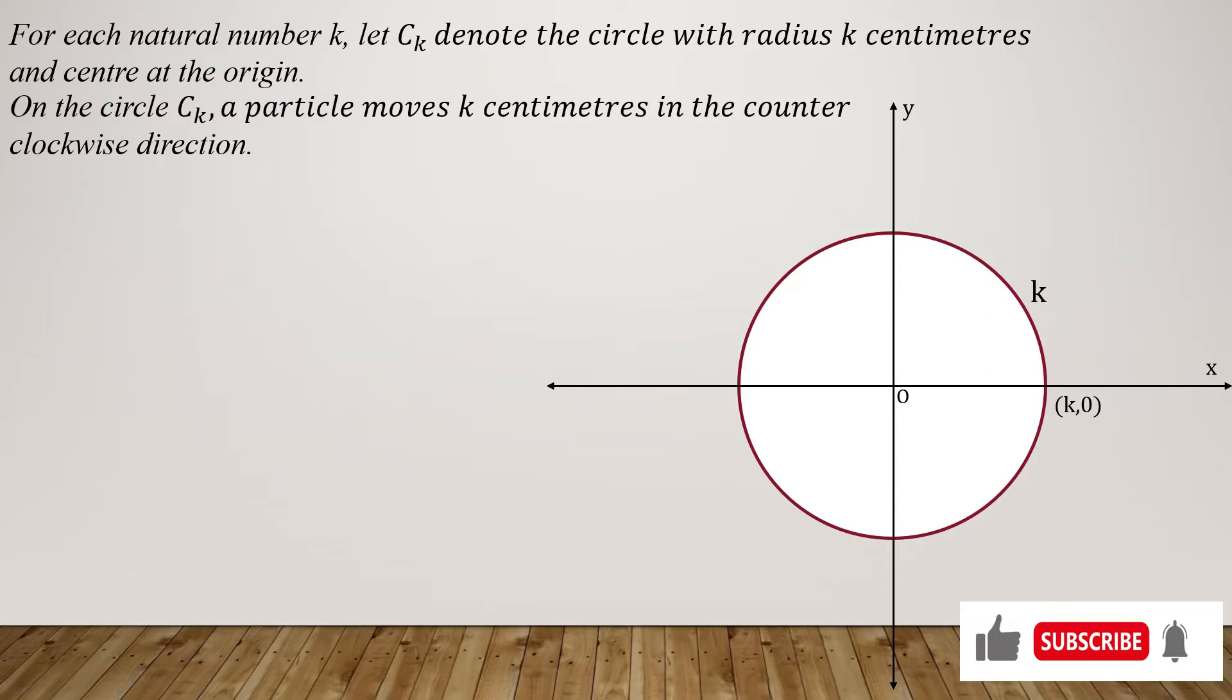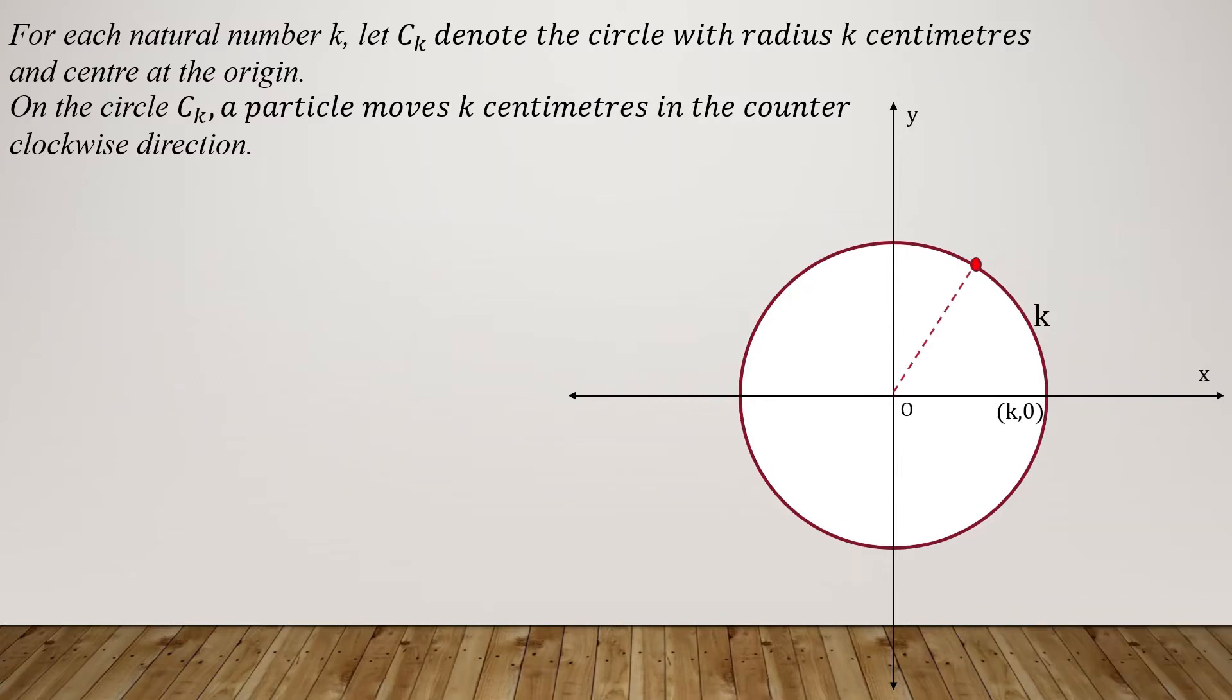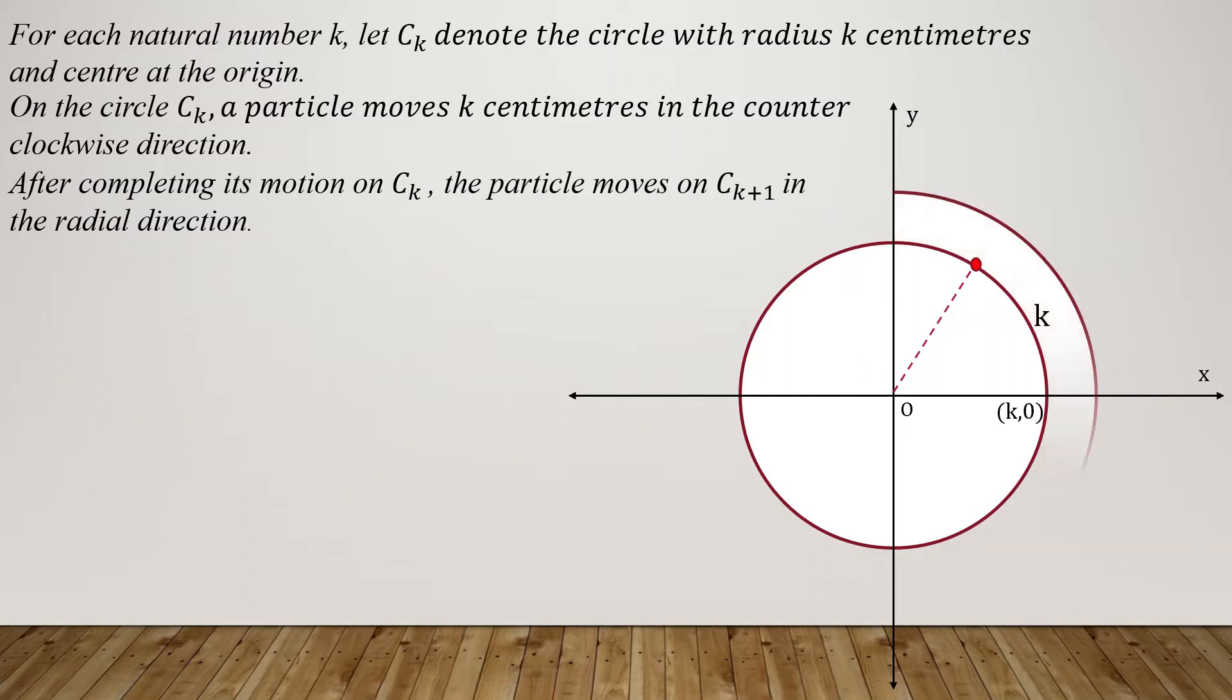On the circle Ck, a particle moves k centimeters in the counterclockwise direction. After completing its motion on Ck, the particle moves on Ck+1 in the radial direction. So we have a circle Ck+1 which has a radius of k+1.